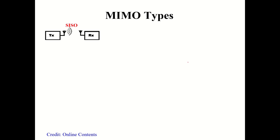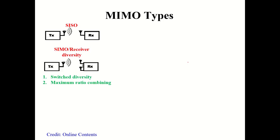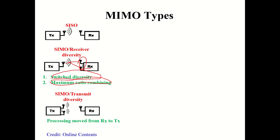MIMO types include: SISO (Single Input Single Output) — the conventional communication system. SIMO (Single Input Multiple Output) — the receiver has multiple antennas, enabling switch diversity where you receive the same signal at both antennas and decode whichever gives better SNR, or use Maximal Ratio Combining.